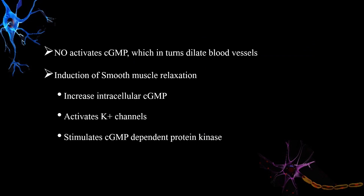Regarding the importance of cGMP: nitric oxide activates cGMP, which in turn dilates blood vessels. Moreover, in smooth muscle relaxation, the induction is mainly through an increase of intracellular cGMP, activation of K⁺ channels, and stimulation of cGMP-dependent protein kinase, which activates myosin light chain phosphatase in muscles.